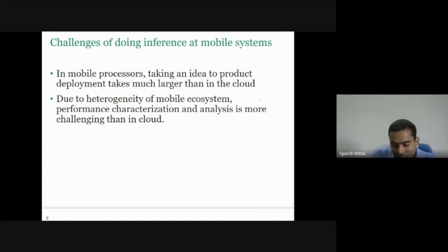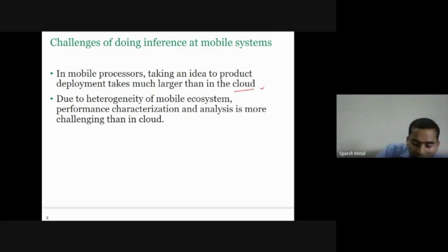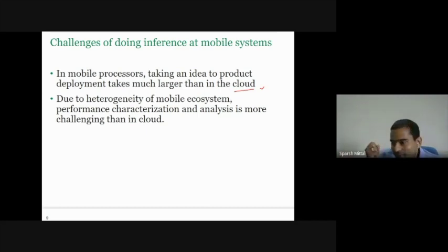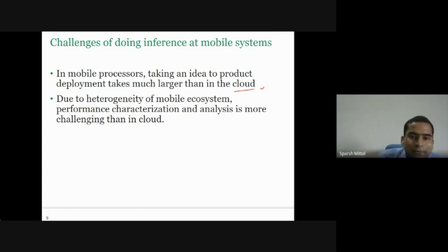There is a difference between doing processing in data centers — that's for the cloud — versus mobile processors. In mobile, taking an idea to product deployment takes much longer than in the cloud. Intel got into the mobile business a few years ago but later sold all its mobile operations. It's very competitive: although mobile phones are attractive, the price war is intense and you constantly need to introduce new features. Due to the heterogeneity of the mobile ecosystem, performance characterization is more challenging than in the cloud.